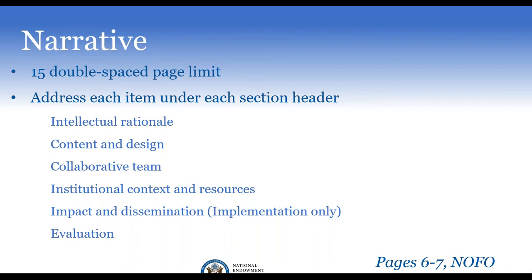Walking through the narrative sections briefly: intellectual rationale — why are you doing this? Content and design — how are you going to do it? Collaborative team — who's going to do it? Institutional context and resources — how will those ensure you can do it? Impact and dissemination — needed only for implementation grants — what's the upshot and how will you share it with others? And for all grants, evaluation — how will you know if you succeeded?